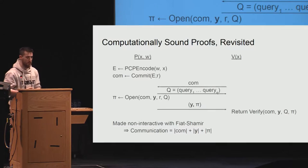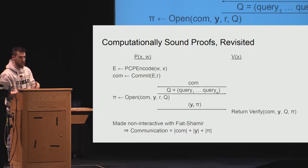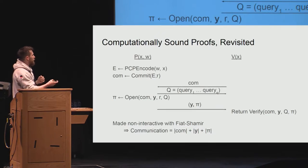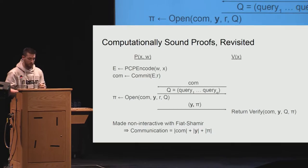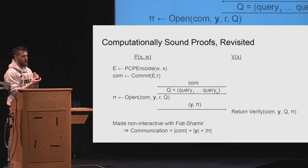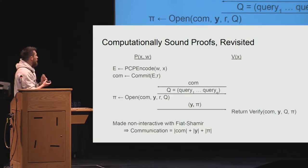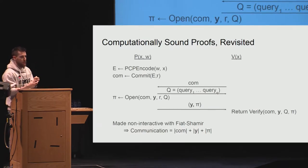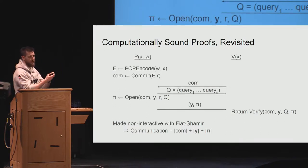This construction follows the classical blueprint of Kilian, but instead uses a vector commitment or linear map commitment. The first message of the prover is the encoding of the witness, and it commits to it using a sub-vector commitment, sending this commitment to the verifier. The verifier picks a set of locations—more generally a set of queries—and sends them to the prover. The prover computes the opening relative to that set of queries. The verifier, once it has the opening together with the proof, verifies the proof and checks whether the PCP relation verifies correctly.